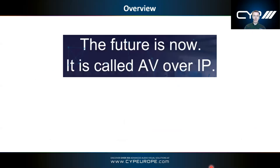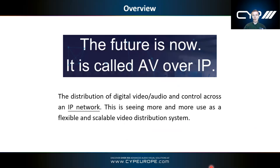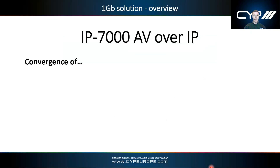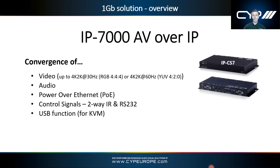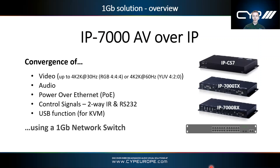So what is AV over IP? It's the distribution of digital video, audio, and control across an IP network. We're seeing it used more and more due to its flexibility and scalability. Much like HDBaseT technology, it utilises multiple data signals over a single cable — but in this case over a network switch rather than a normal matrix. The AV over IP system sends video, audio, Power over Ethernet (PoE), control signals, and USB functionality for keyboard and mouse control.